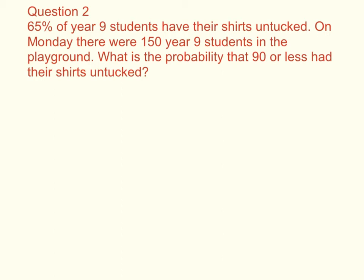So here's question two. Again, the first step, as always with any problem, is to define the random variable. So we're going to say that x is the number of year 9 students with untucked shirts. And the distribution of x, x has a binomial distribution, where n is 150, and the probability is 0.65.